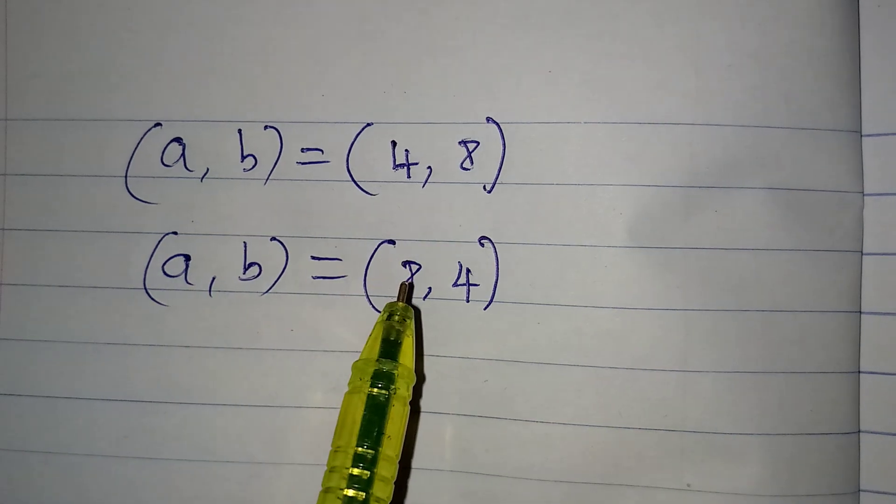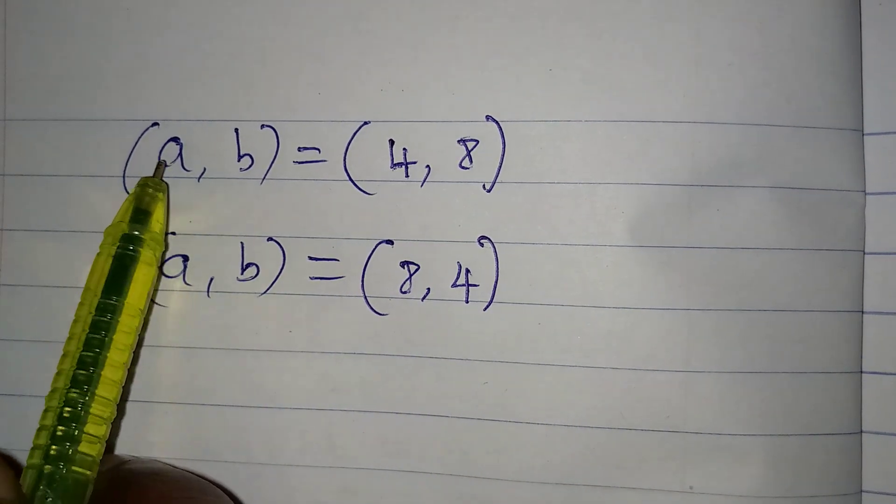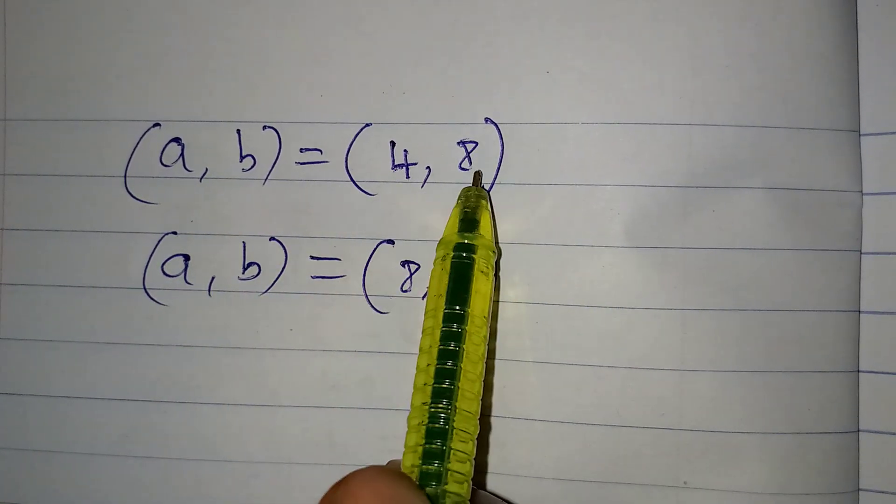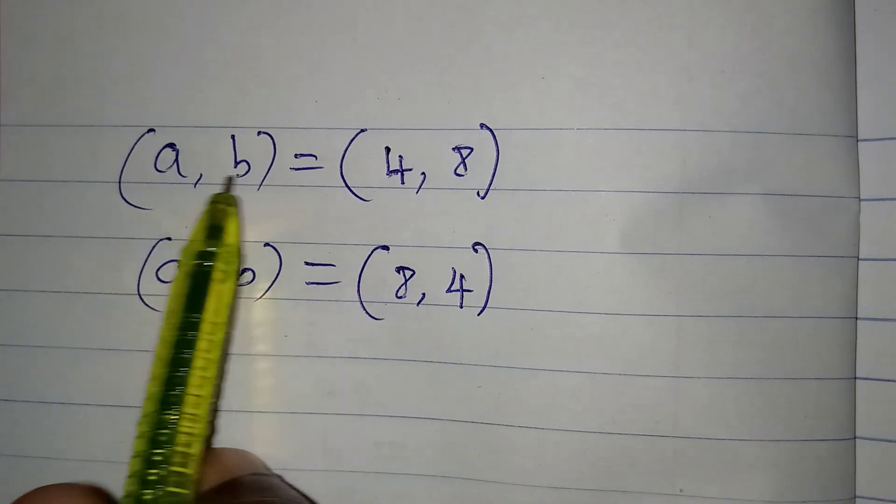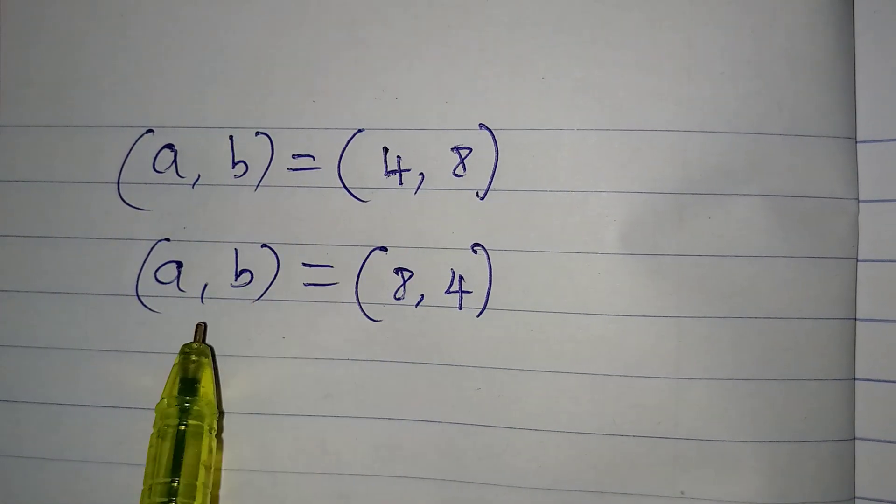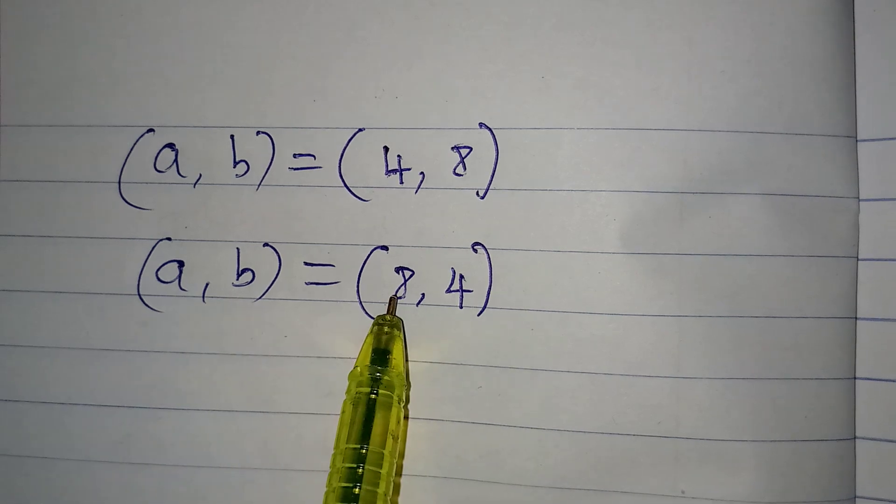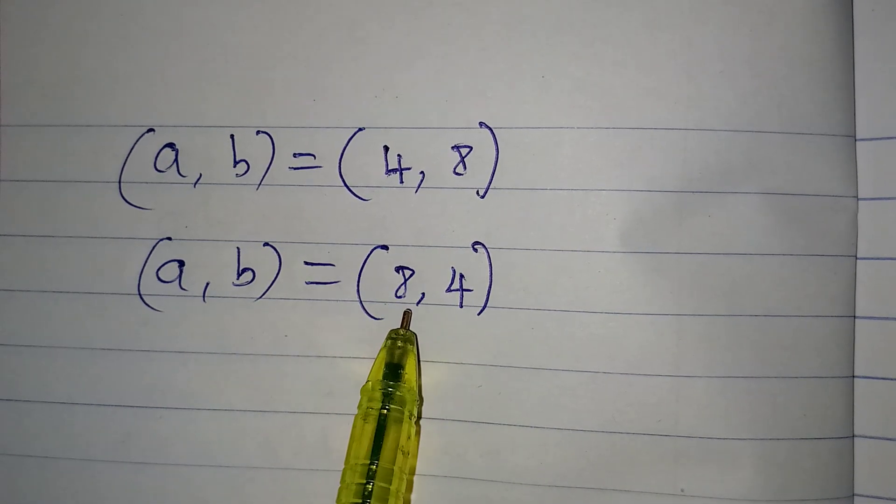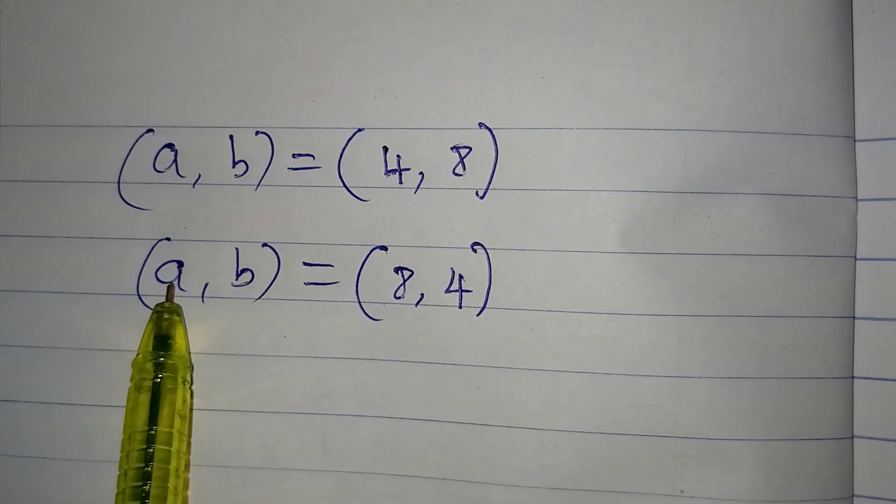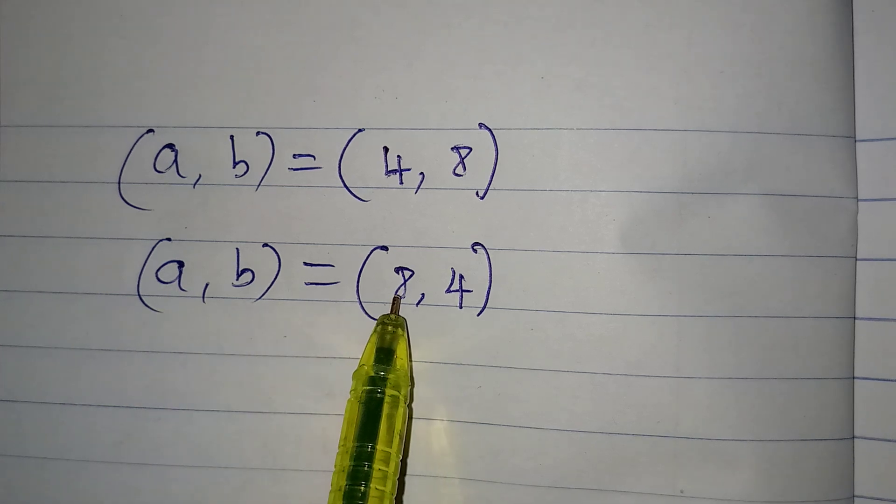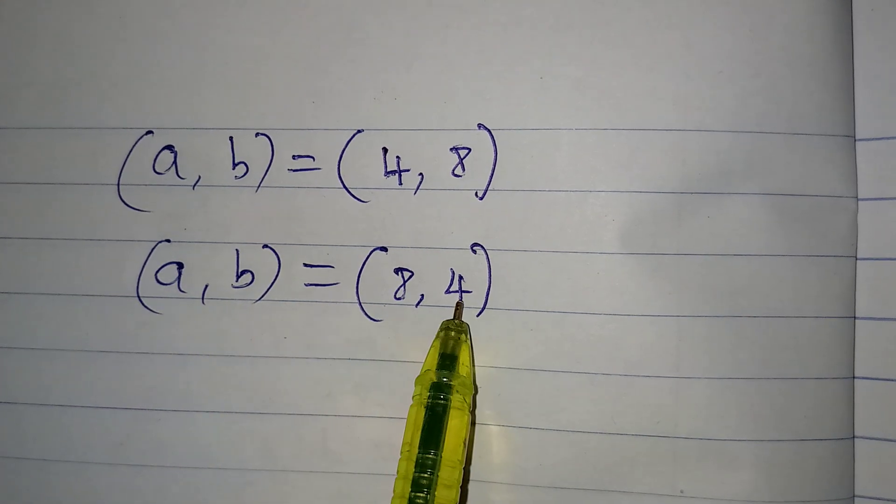So these are the values we got. We have A comma B to be equal to 4 comma 8, meaning that when A is 4, B is 8. And A comma B to be equal to 8 comma 4, meaning when A is 8, B here is 4.